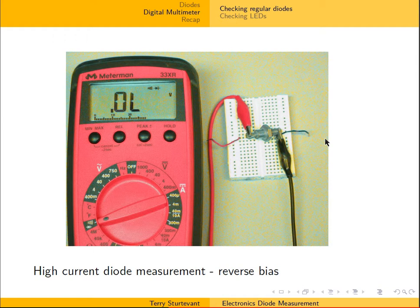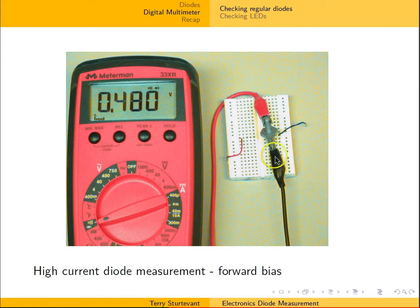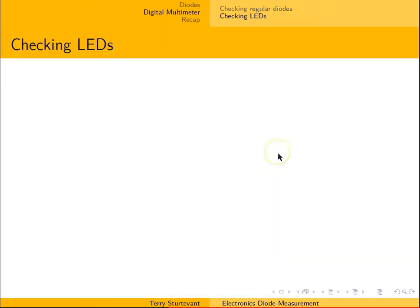With the high current diode from before, now we can tell which end is the anode and which is the cathode. We see this is open circuit, which means it's in reverse bias. And here now we see a voltage indicating that it's in forward bias. So the cathode is the connector down at this end.